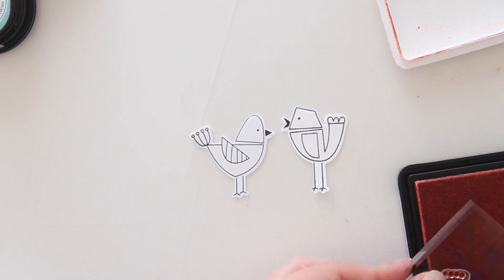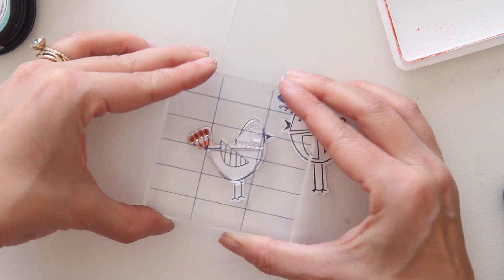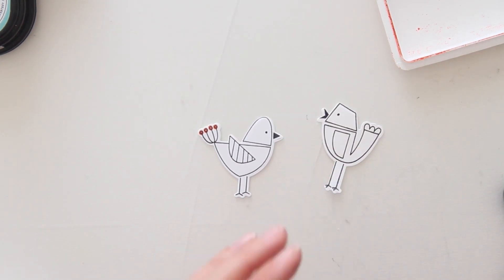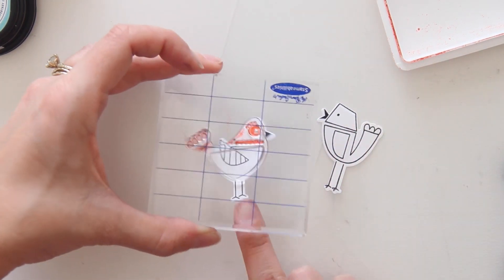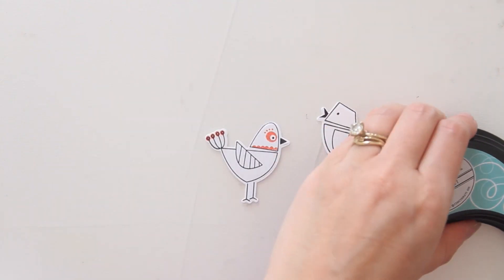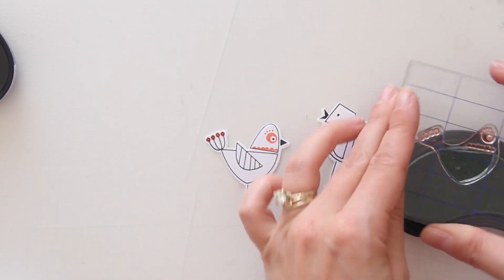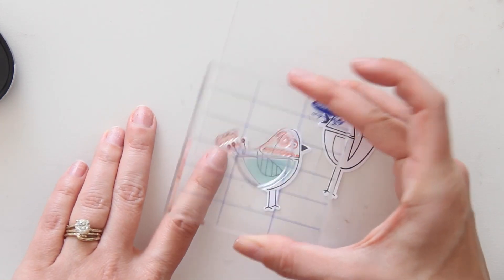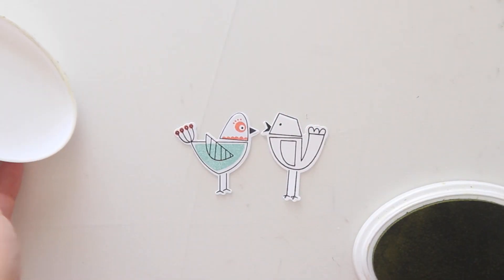I'm using some fresh peach ink from Hero Arts, and I'm first going to stamp down just the tail of that bird in that color. You could mask this off if you wanted to be really precise, but I just stamped this section of the stamp that I wanted down in the ink, and I didn't find that I had problems with it overlapping. I did the part around the eye and the neck of the bird also in fresh peach, and then I just took some blue ink and put that down for the main body of the bird.